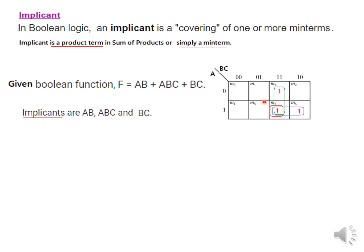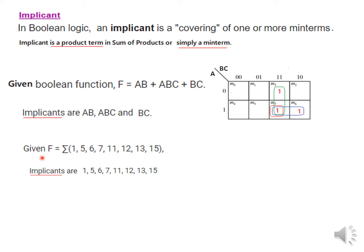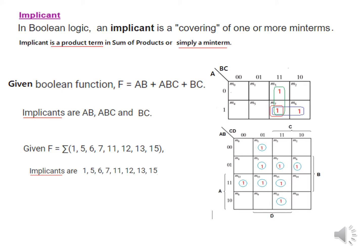We can mark them like this: bc, ab, and abc. A function can also be given in terms of main terms, so all the main terms will also be called implicants. This is not very critical — what is important is coming in the next slide.